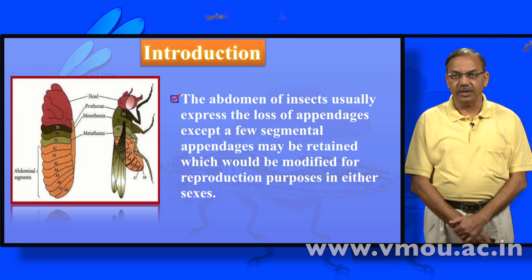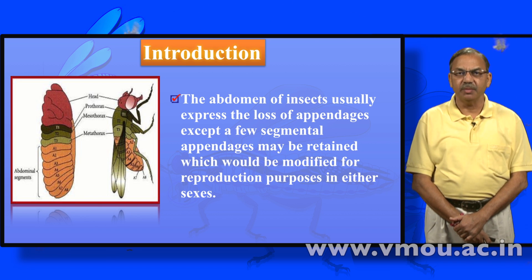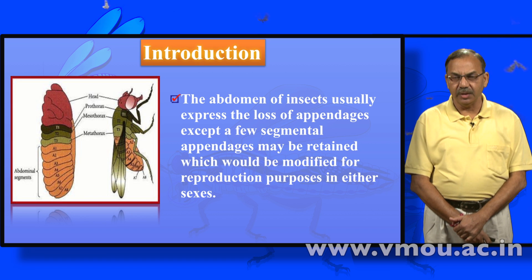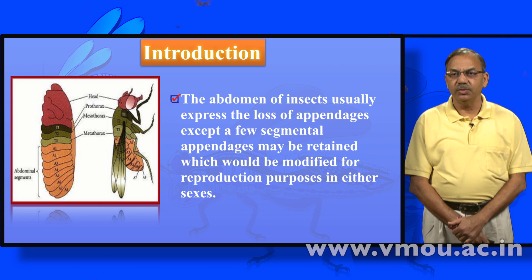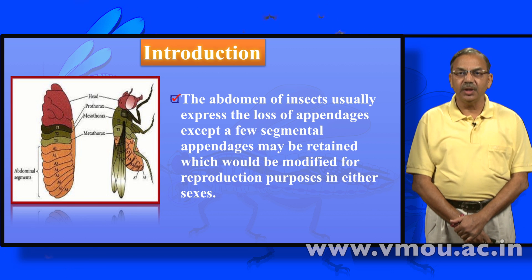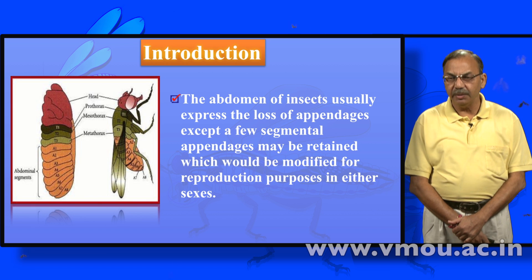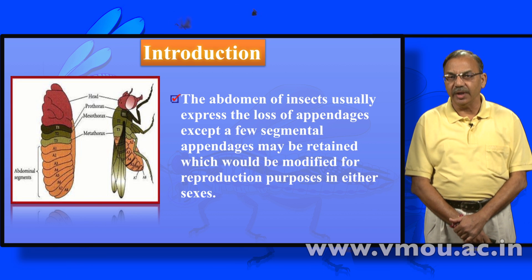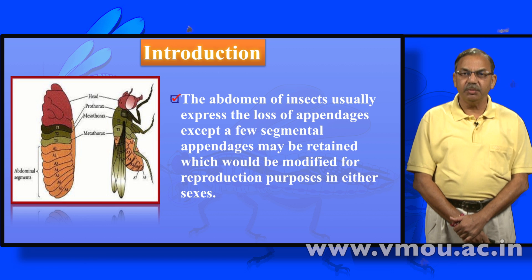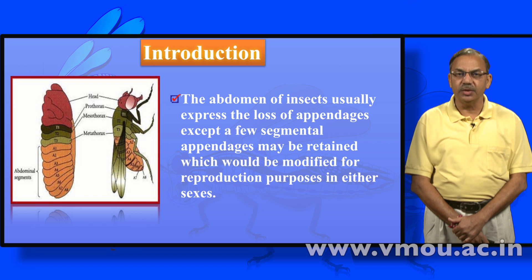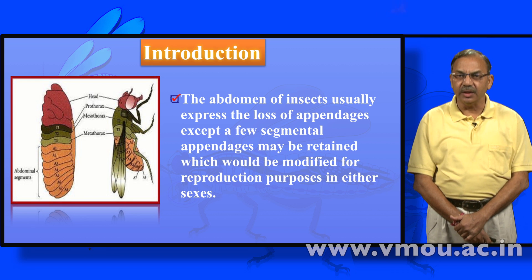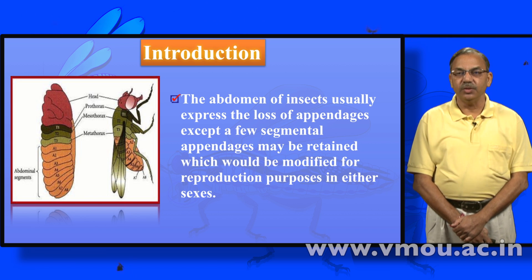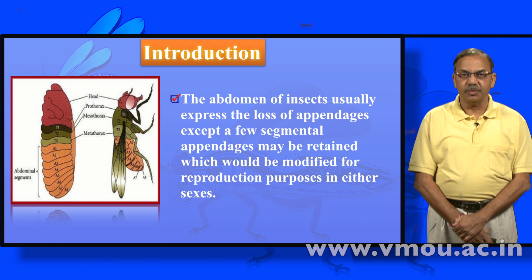In the head segments, the appendages we have seen are pre-antennal, antennal, labral, mandible, maxilla and labium. In the thorax, there are three segments with three pairs of walking legs and wings. In the abdomen, there is a reduction of appendages, but some segmental appendages are retained in the last two segments — in the form of annals, cerci, and male claspers.